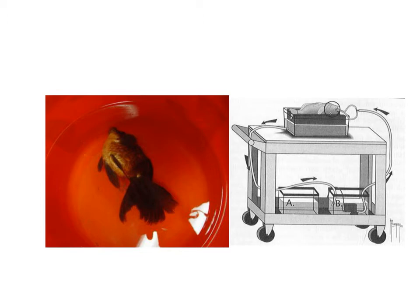A fish at a surgical plane of anesthesia will be on its side or upside down — you might still see a little fin movement, but you should notice regular movement of the opercula indicating it's still breathing. For a short procedure, pull the fish out of water, put it on a wet sponge or wet paper towel, do your procedure, and occasionally put fresh water on the gills. For a longer procedure taking more than a couple of minutes, use a more detailed surgical setup with two tanks — tank B has a pump circulating anesthetic water through the fish's gills and back, adequately aerated to deliver both anesthesia and oxygen.